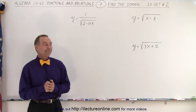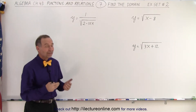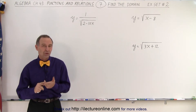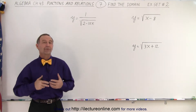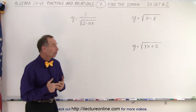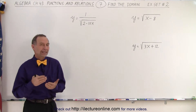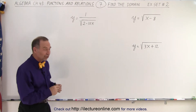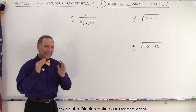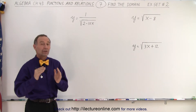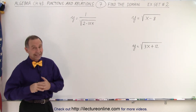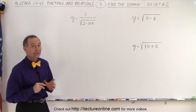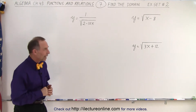Welcome to our lecture online. In these three examples, we have to look for two potential things that we need to prevent. First of all, if there's a denominator, we cannot have a zero in the denominator. And secondly, if there's a radical, the quantity inside the radical cannot be less than zero — it cannot be a negative number. Those are the two restrictions we have to look for when we're looking for the domain.